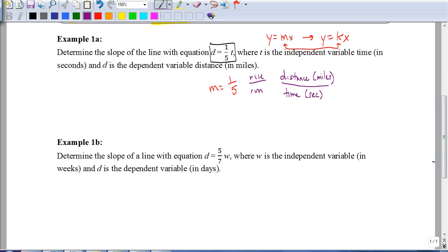But, if we're asked to just find the slope, like in 1b here, obviously, it's just going to be five-sevenths.